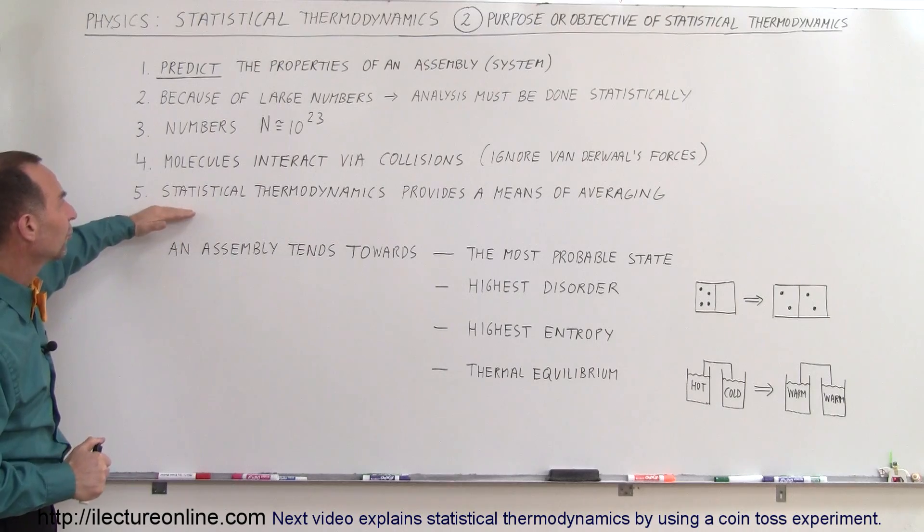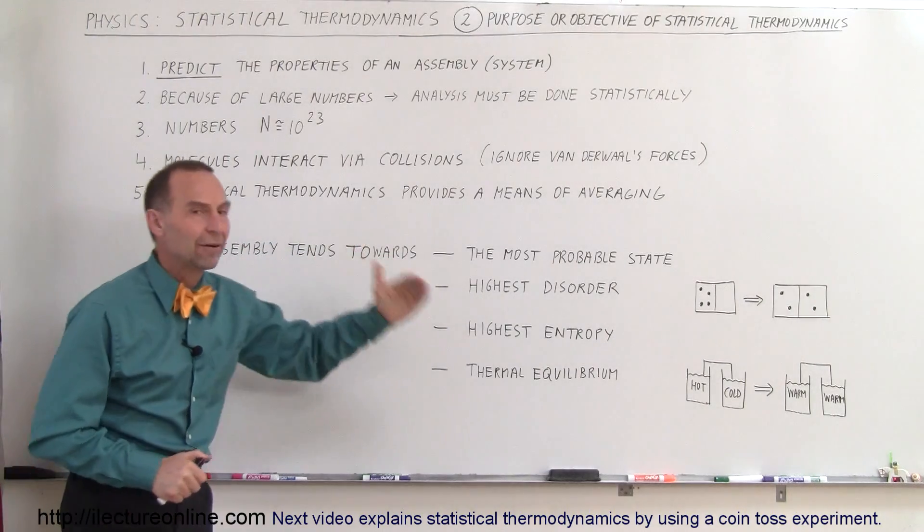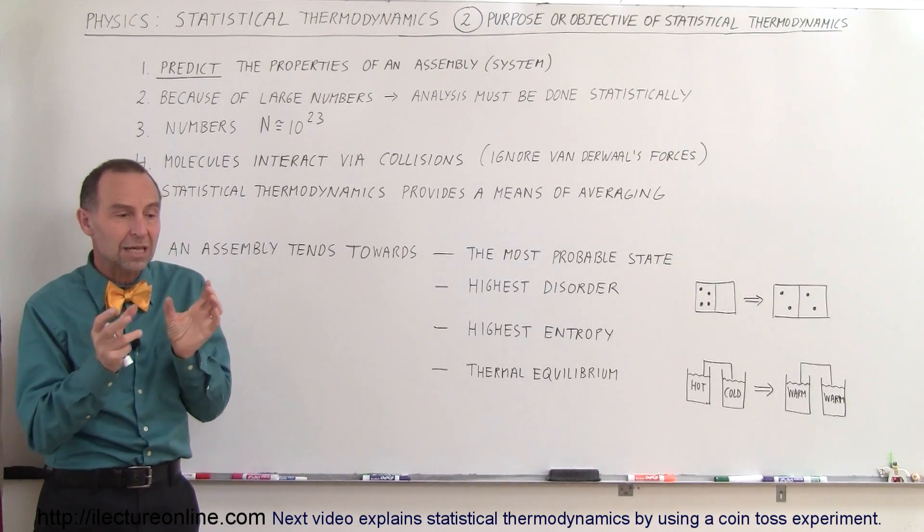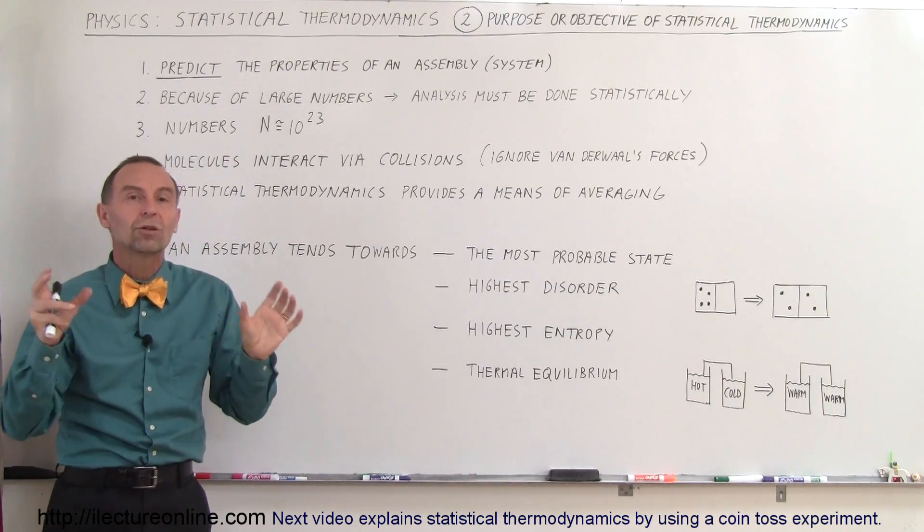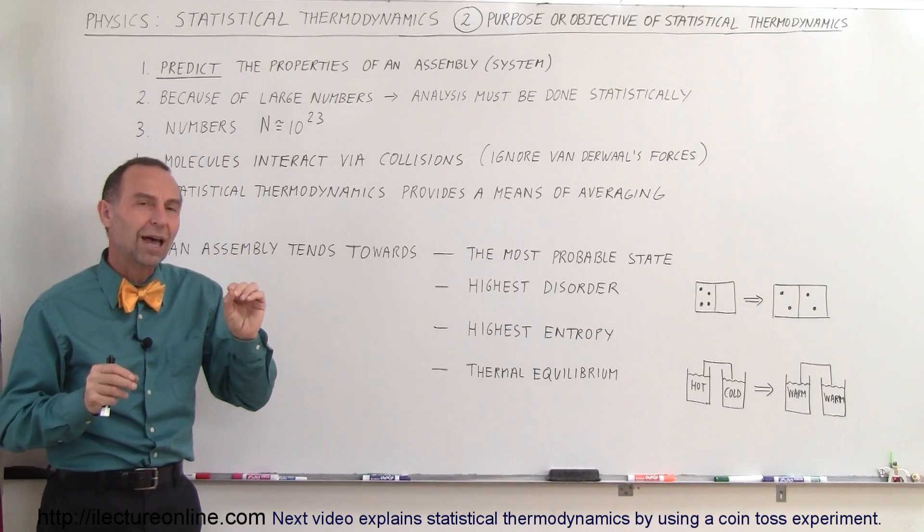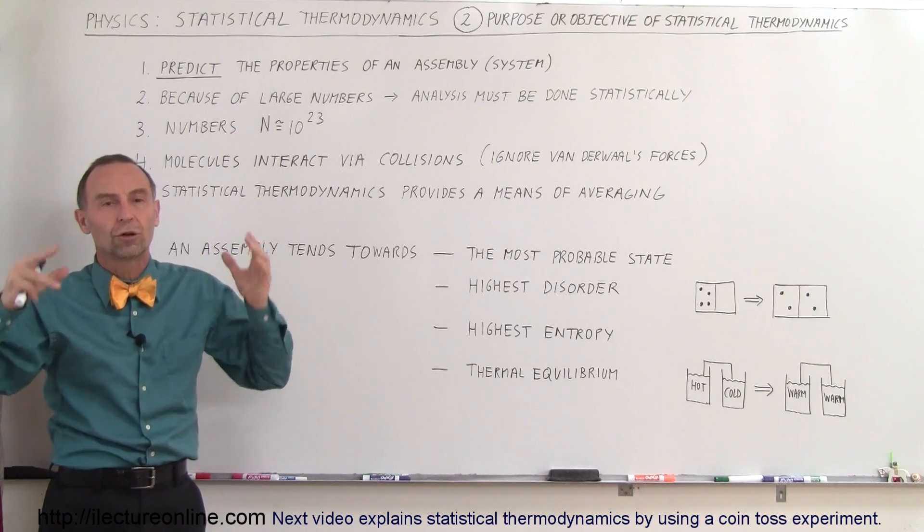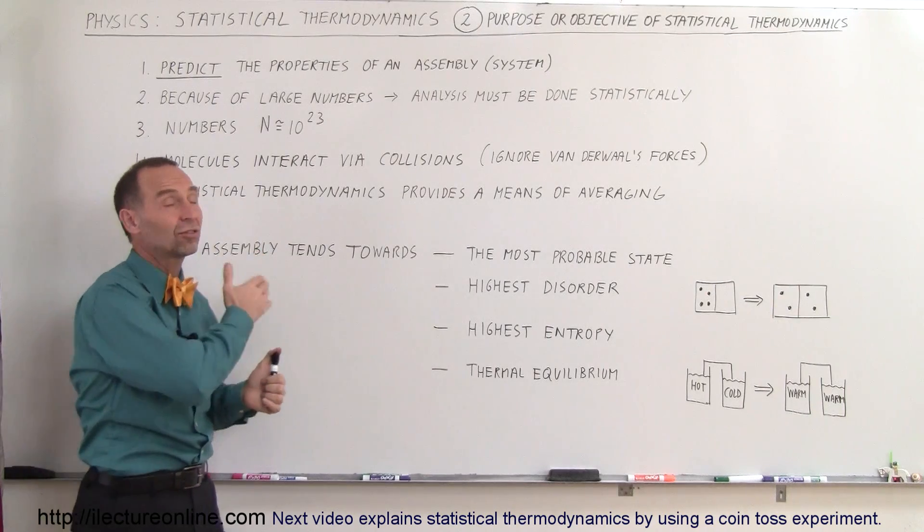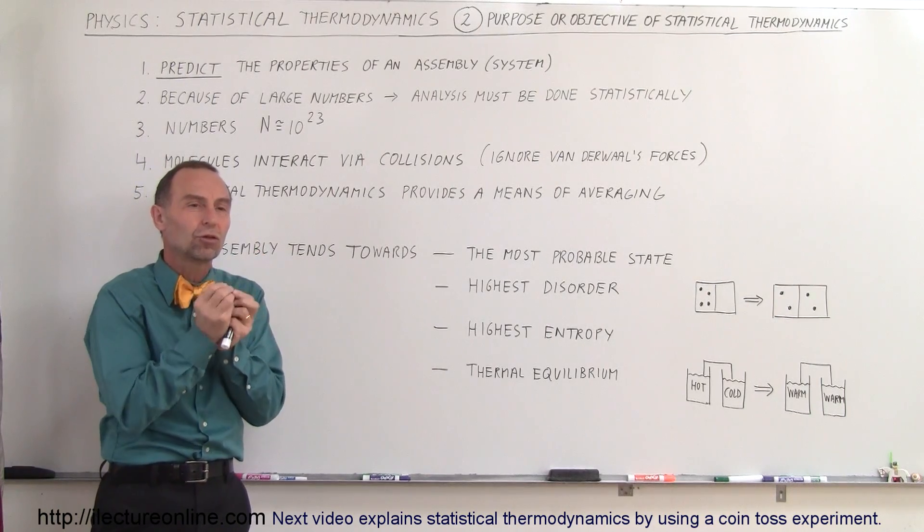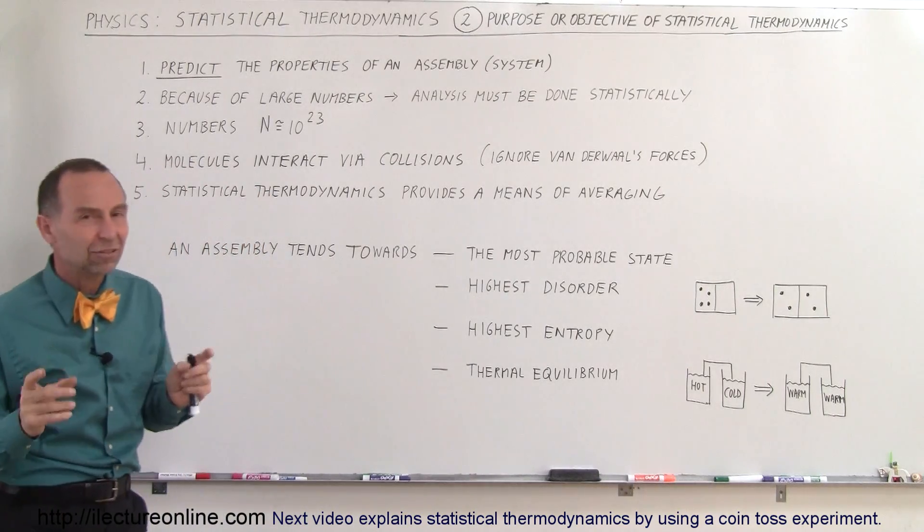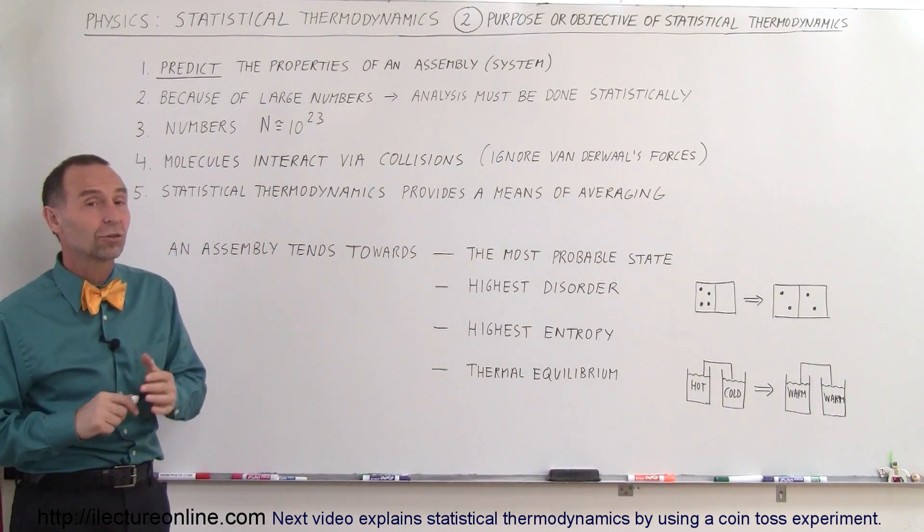Also, statistical thermodynamics provides a means of averaging. So it's all down to that you could have exceptional cases where the typical outcome is not going to be seen, but the probabilities happening are typically very low. And so on average, over a large period of time, you can say that statistical thermodynamics gives us the solution in terms of the average value, the more typical value we can expect. And that's the reason why we use statistical thermodynamics.